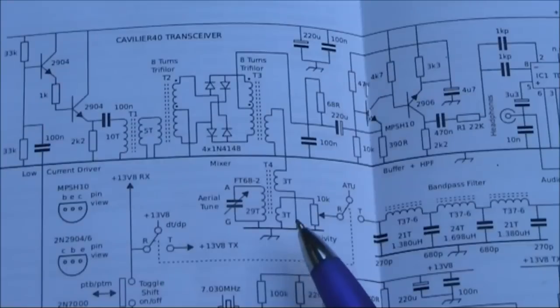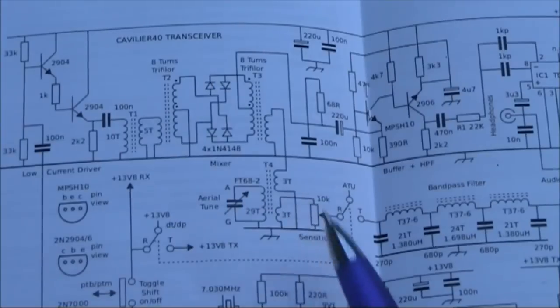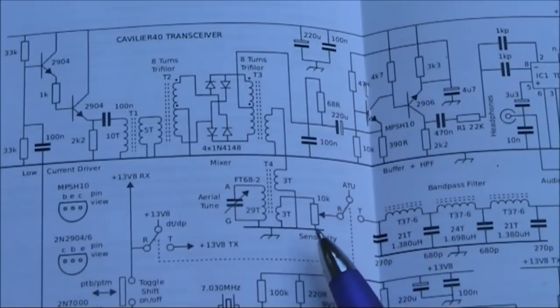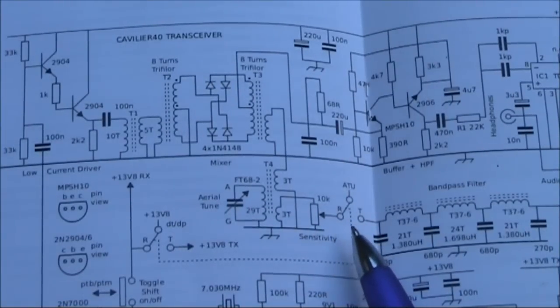On high frequency bands like 14 meg, that may not be the case and you might want some extra gain. You might need a FET RF preamp and possibly an extra front end tuned circuit to deliver that.